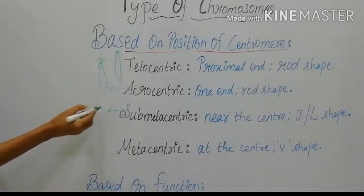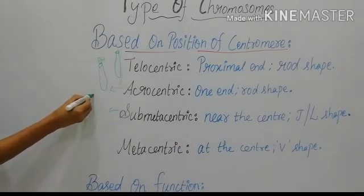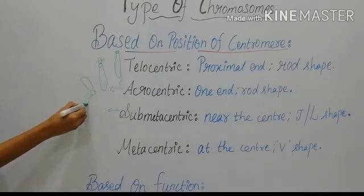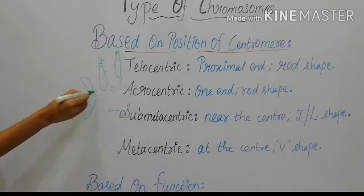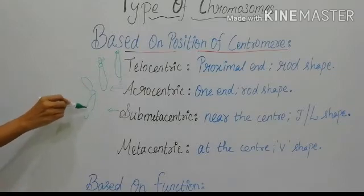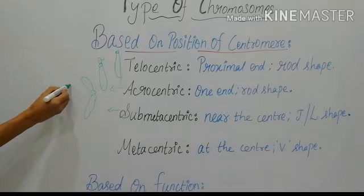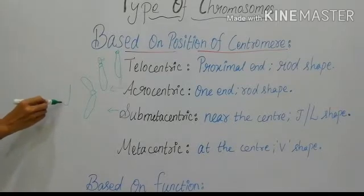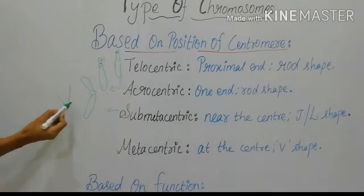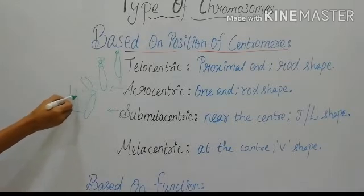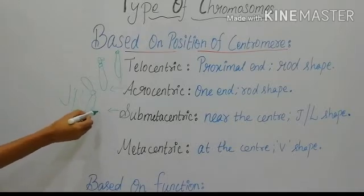In submetacentric, the centromere is present near the centre — not exactly at the centre, but close to it. Hence, two unequal arms are present. It is J or L shaped: in the J shape the two portions are unequal, one long and one short; in the L shape the vertical line is long and the horizontal line is short.